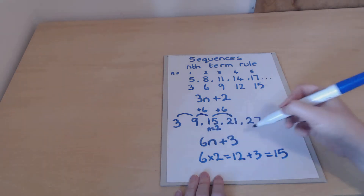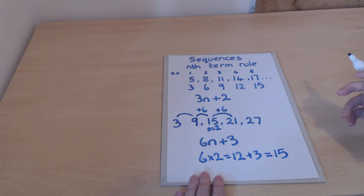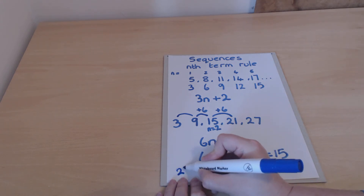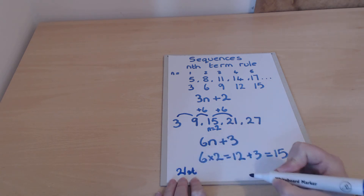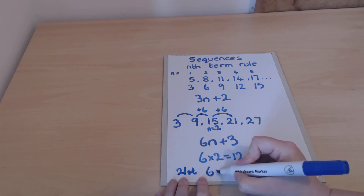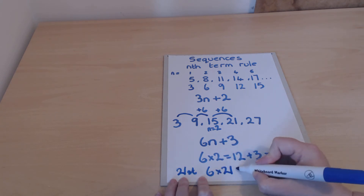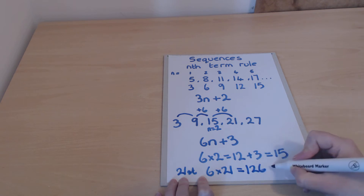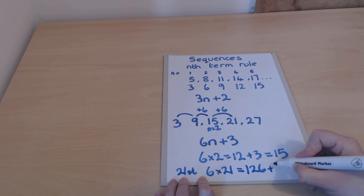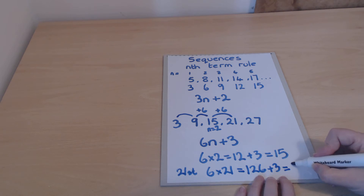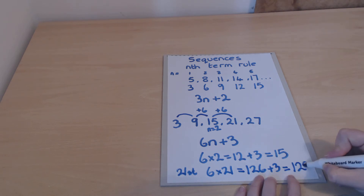Now I can take that rule and use it for whatever term I wanted. If I wanted to know what the 21st term was, I'd put in n equals 21. So 6 times 21 gives me 126, add on 3, so the 21st term would be 129.